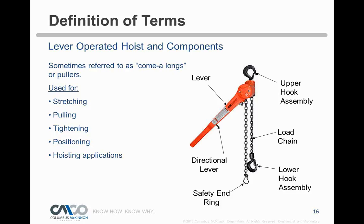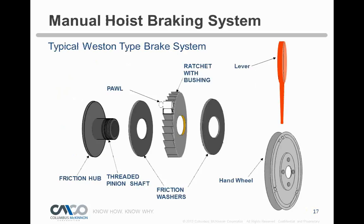A lever tool has an upper hook assembly, lever, load chain, directional lever, lower hook block, and a safety end ring which prevents the chain from coming out. Both lever and chain fall hoists typically use what's known as the Weston-type load brake — a friction disk sandwiching a ratchet and pawl between a brake hub. The Weston brake was designed by engineer Thomas Weston at the turn of the century and is used extensively in hoisting equipment today.